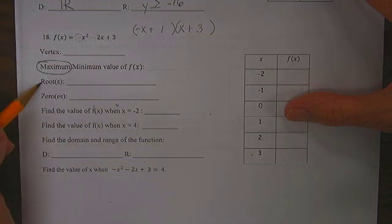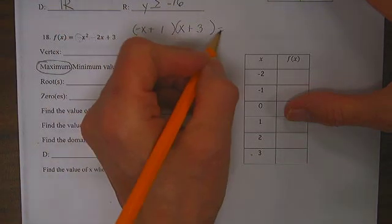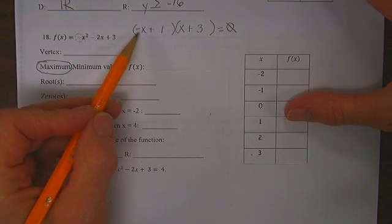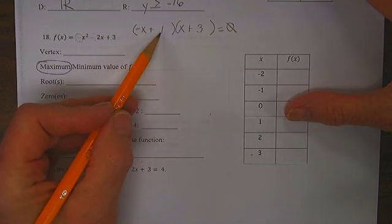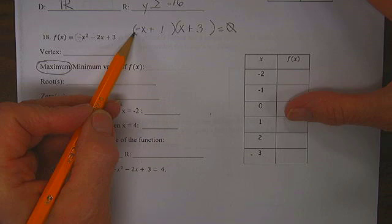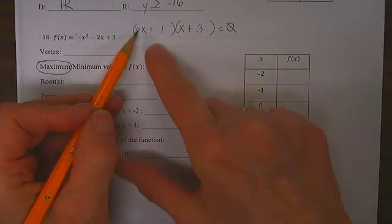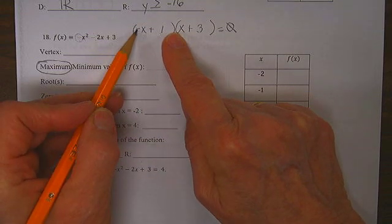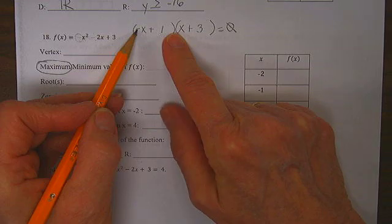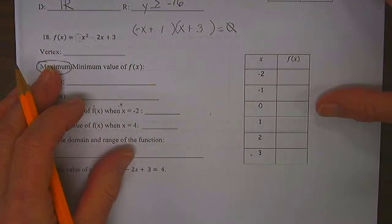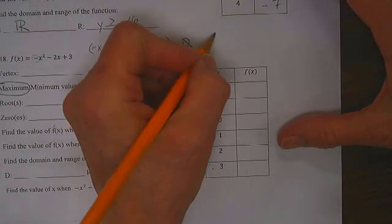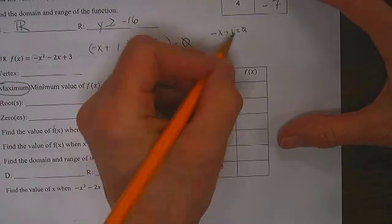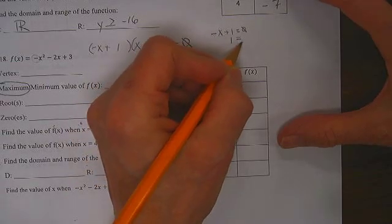What are the roots or the zeros? Well, if I set this function equal to 0, then either negative x plus 1 equals 0. If negative x plus 1 equals 0, I add x to both sides. 1 is equal to x.